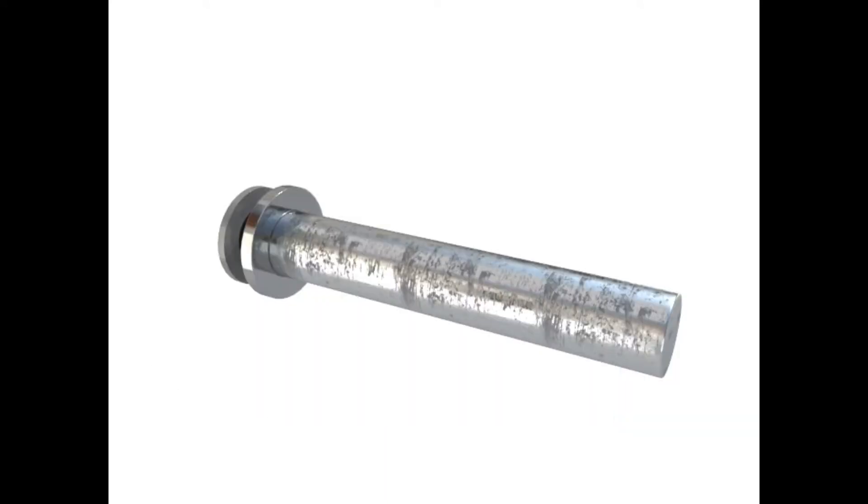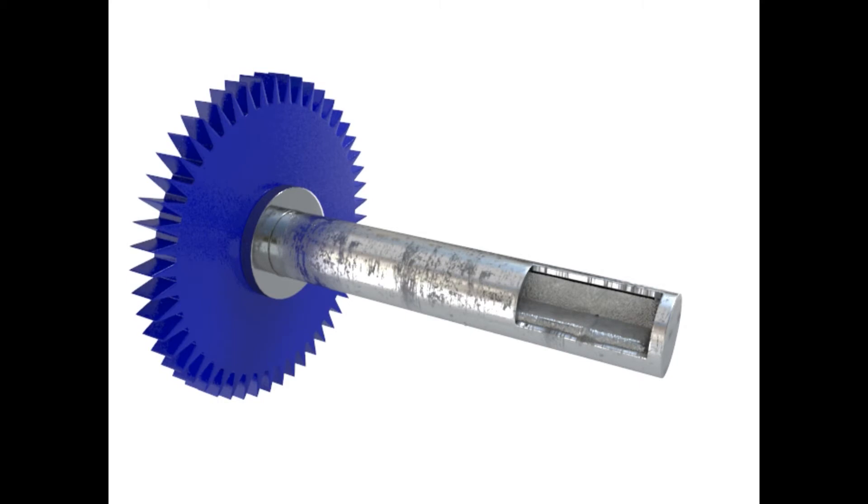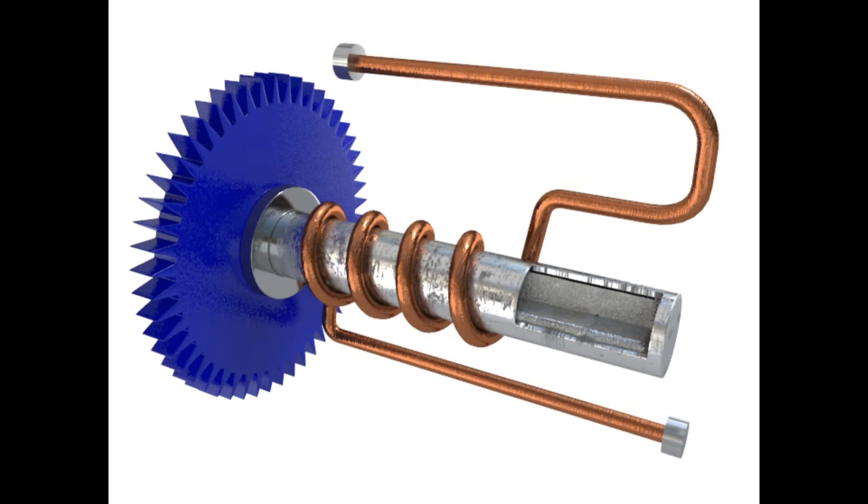In a melting alloy overload relay, the eutectic alloy is housed in a tube along with an inner shaft cemented in place. This tube is connected to a ratchet wheel. The temperature of the alloy is controlled by a heater coil wrapped around the outside of the tube. The heater coil is directly connected to the circuitry of the motor, so when dangerous amounts of current run through the motor, the wire coil will also heat up.